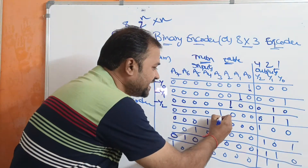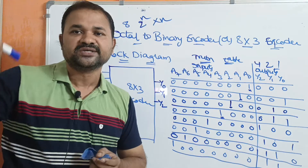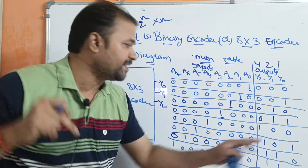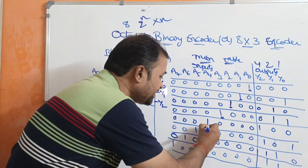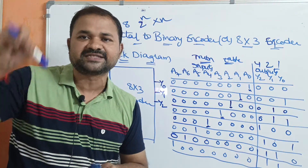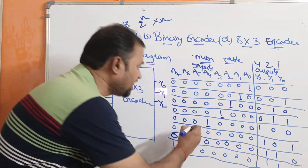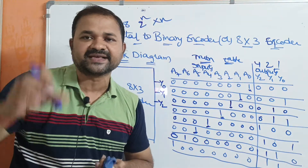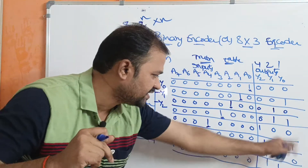Next, a3 is active — remaining bits are 0. We get the output as decimal 3 in binary, which is 011. Next, a4 is active and remaining bits are 0, giving output as decimal 4 in binary: 100. Next, a5 is active and remaining bits are 0, giving output as decimal 5 in binary: 101.